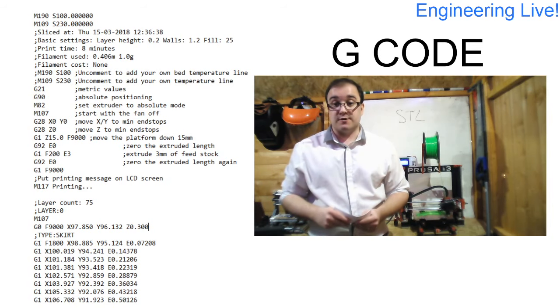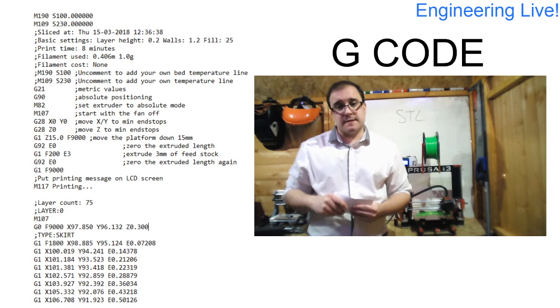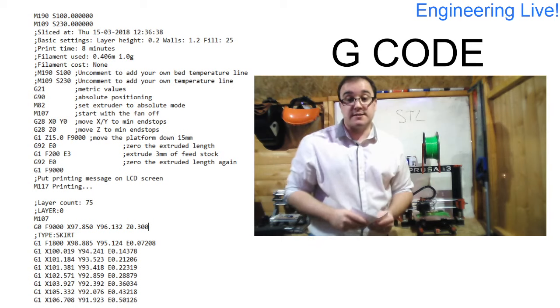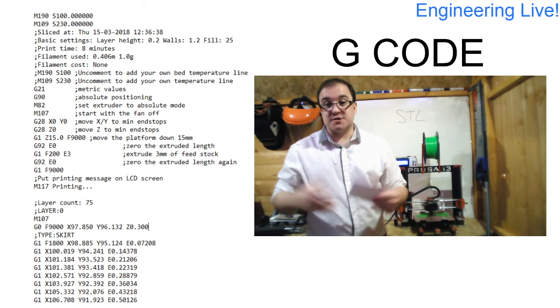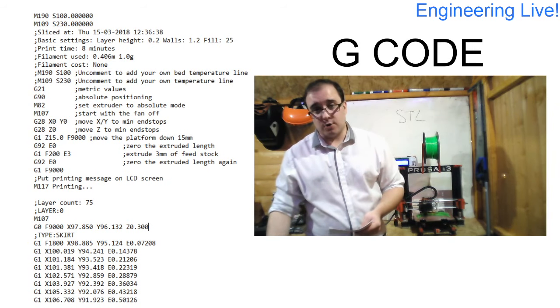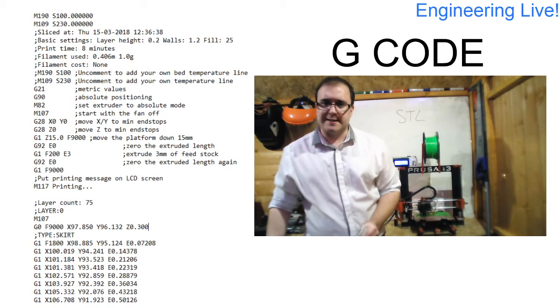So everything up here in about the top two thirds of the page are the initializing commands. They set up the printer with our right temperatures. The rest of it is the coordinate list that tells it where to move to. Let's have a little look then at breaking down this code and working out exactly what it does.